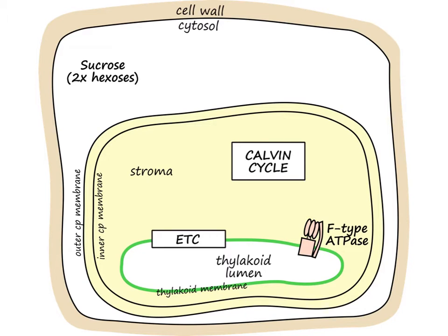Photosynthesis is quite a complicated process that involves a number of different areas within the cell. Here I've got a stylised version of a plant cell, showing the plasma membrane and the cellulose cell wall outside it. The structure in yellow is the chloroplast, which is a double membrane structure with an inner and outer membrane. Inside the chloroplast, there are structures called thylakoids, which are membrane-bound structures containing the thylakoid lumen. In order to make sugars, we need three different locations: the cytosol, the stroma, and the thylakoids themselves.